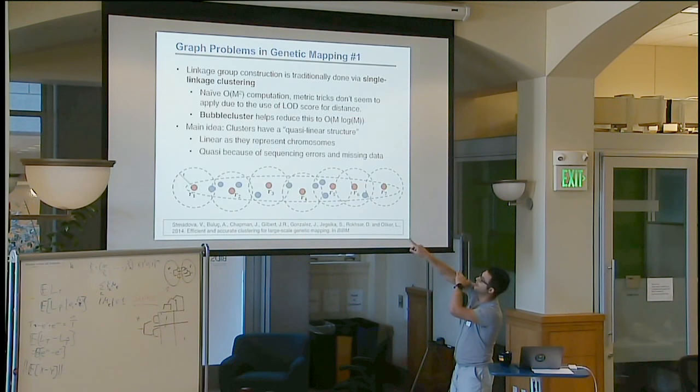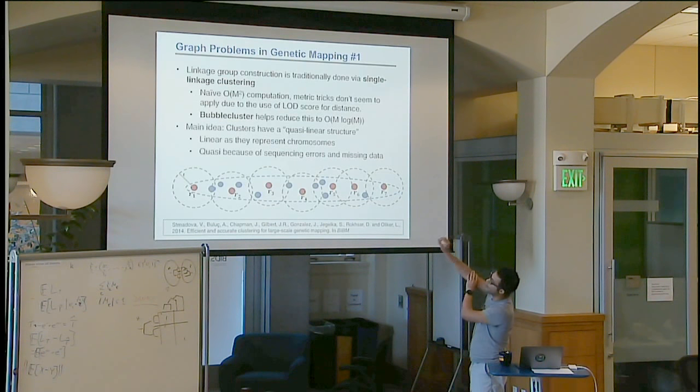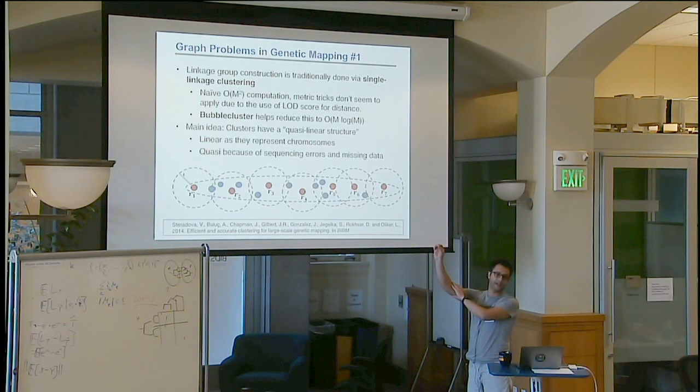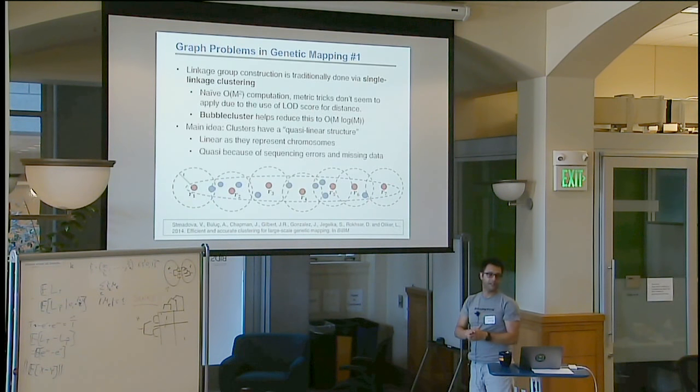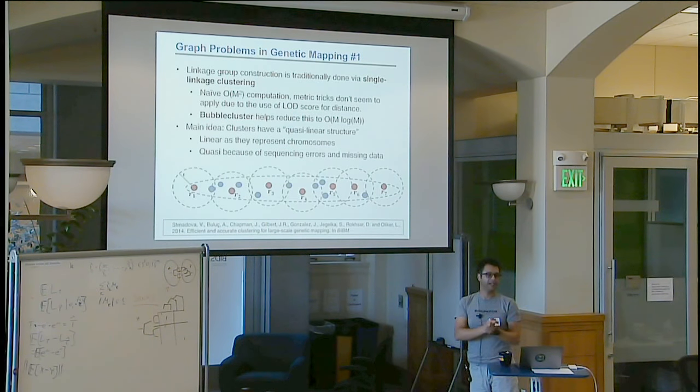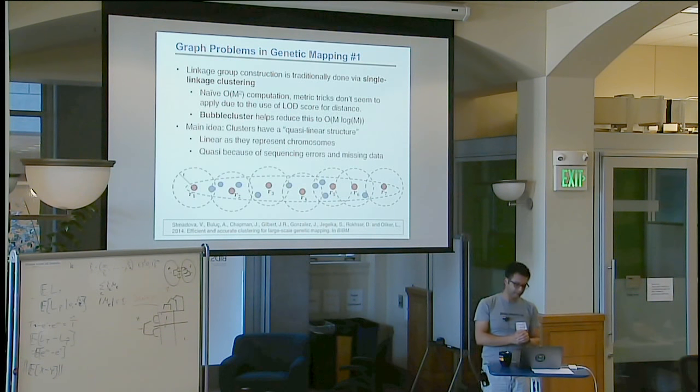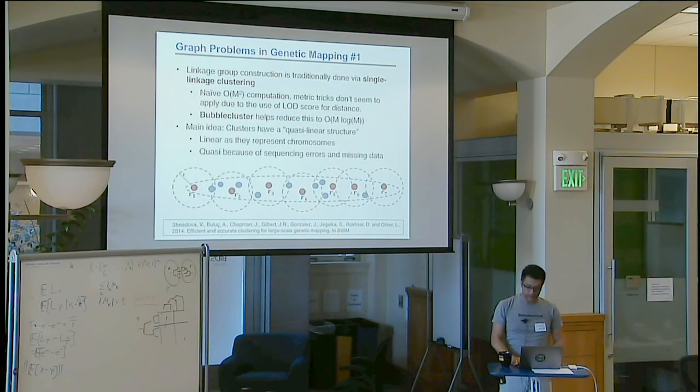So the main idea, what we developed here is an algorithm called bubble clusters, which essentially relies on the whole thing that these set of points are quasi linear in space. They would be completely linear if there were no errors or no missing data, but due to these errors and missing data, they kind of look like a little bit off. But at the end of the day, they still look awfully linear. So by using this structure, you can basically create these representative points. That's awfully similar to some of the ideas that people have developed in other clustering domains that use the physical information. And it works just fine. You get F scores to 0.9999.